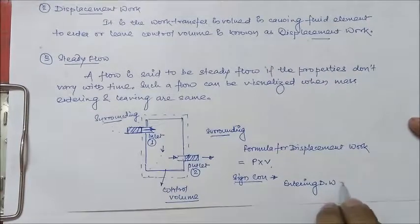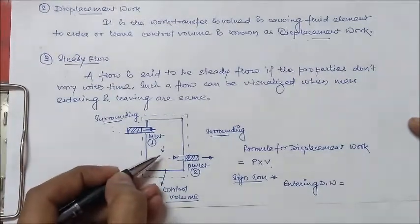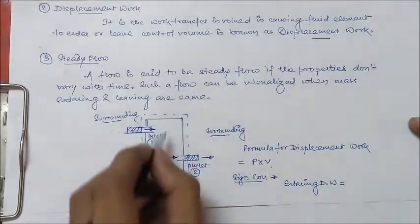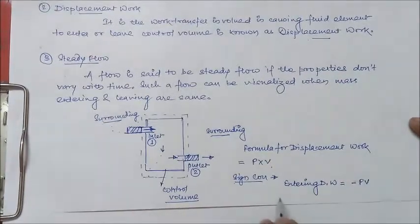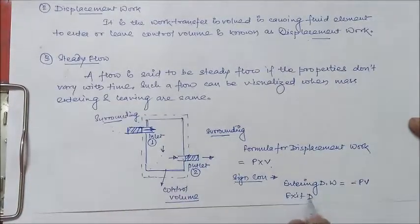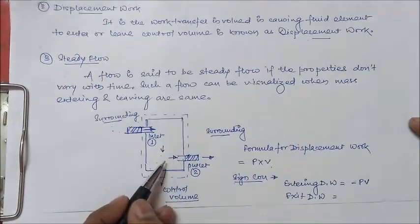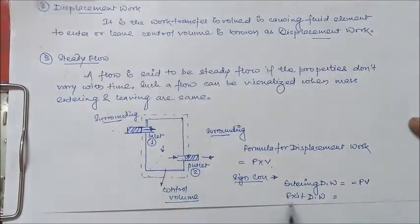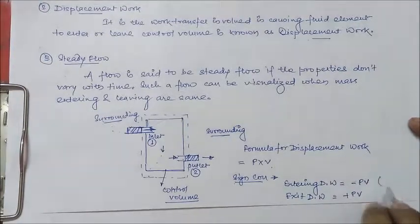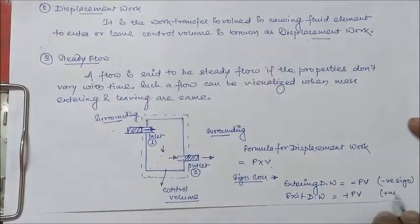For the sign convention: for entering displacement work, as the surrounding is doing work on the control volume — which is our system — it will be negative pv. For the exit displacement work, it is the work done by the control system on the surrounding, so it will be positive pv. So entering displacement work is negative and exit displacement work is positive.